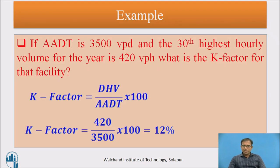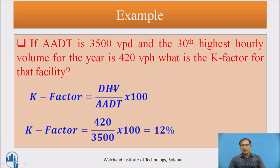Example: If the ADT is 3,500 vehicles per day and the 30th hourly volume is 420 vehicles per hour, find the K factor. K factor equals design hourly volume divided by ADT: 420 divided by 3,500 gives a K factor of 12 percent.